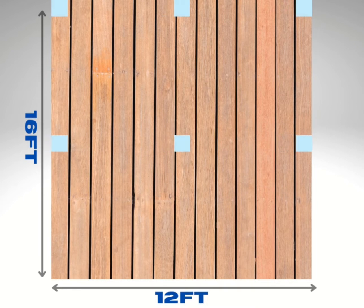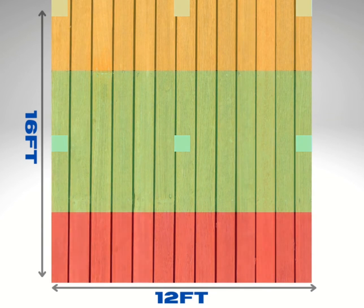To begin calculating the tributary area, we need to find the midway point between each support, and that's going to look something like this. So we've got four feet, eight feet, and four feet wide.